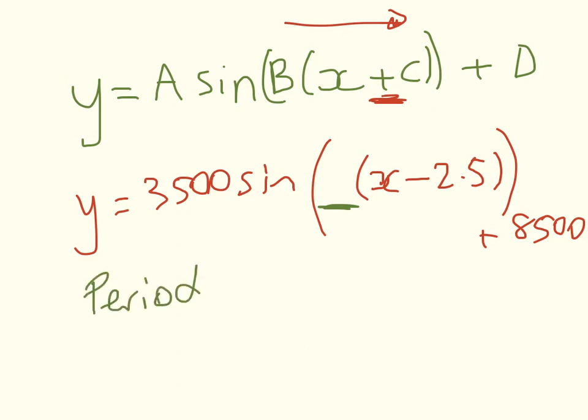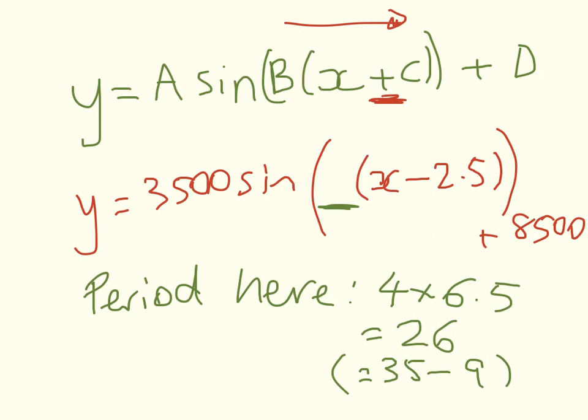Now what is that scale factor going to be? Our period here is 4 times 6.5, so it takes 26 weeks for one complete cycle. That's really easy to see because the difference between the maxima is 35 minus 9. In a normal basic sine curve the period is 2π, so there's a link between those two for our scale factor. Our scale factor will be the normal period of a sine curve divided by our period, which is π on 13.